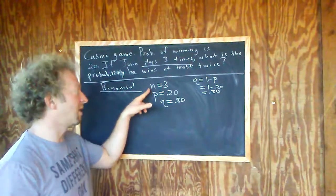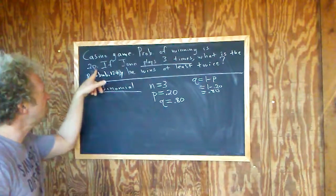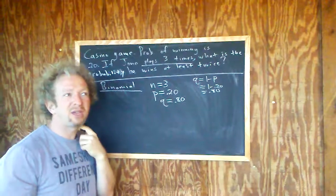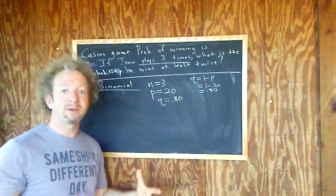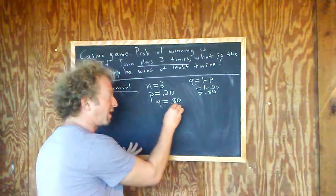So again, N is how many times he plays the game, so he plays three times. P is the probability of success. Usually it's given in these problems. The only thing I can think of where it's not given is like a coin-flipping problem where it's one-half. And then Q is the probability of failure, so 0.80.